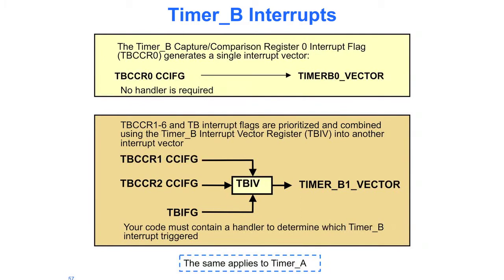Timer B interrupts. There are a limited number of interrupts that go into the MSP430 CPU, and this applies to both timer A and timer B. The timer B capture comparison register 0 interrupt flag creates a single interrupt vector that goes to the CPU.